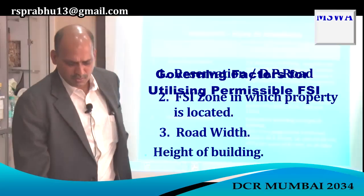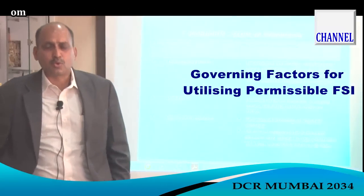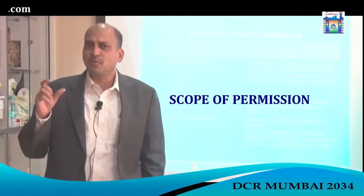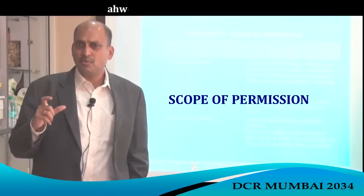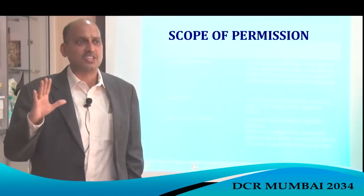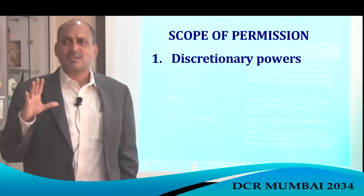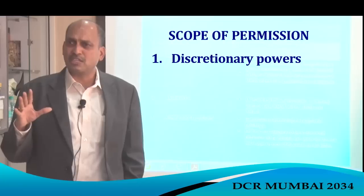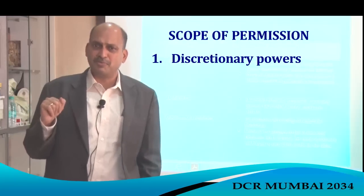These are the four things we will discuss. Let us start with the first one: scope of permission. In the old Development Control Rule, for any concession we were required to go to the Municipal Commissioner. The most important concession normally given by the Municipal Commissioner whenever a proposal is given is the open space deficiency.